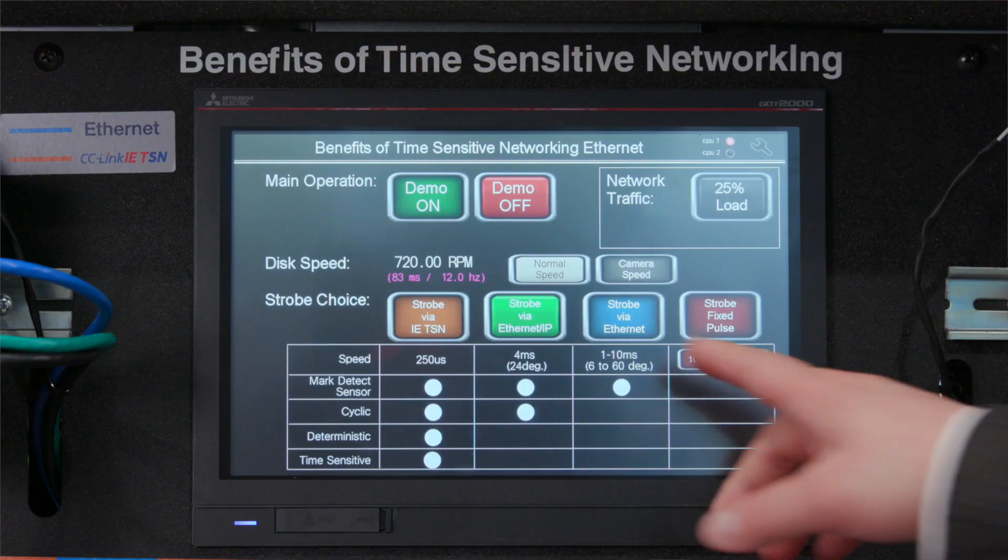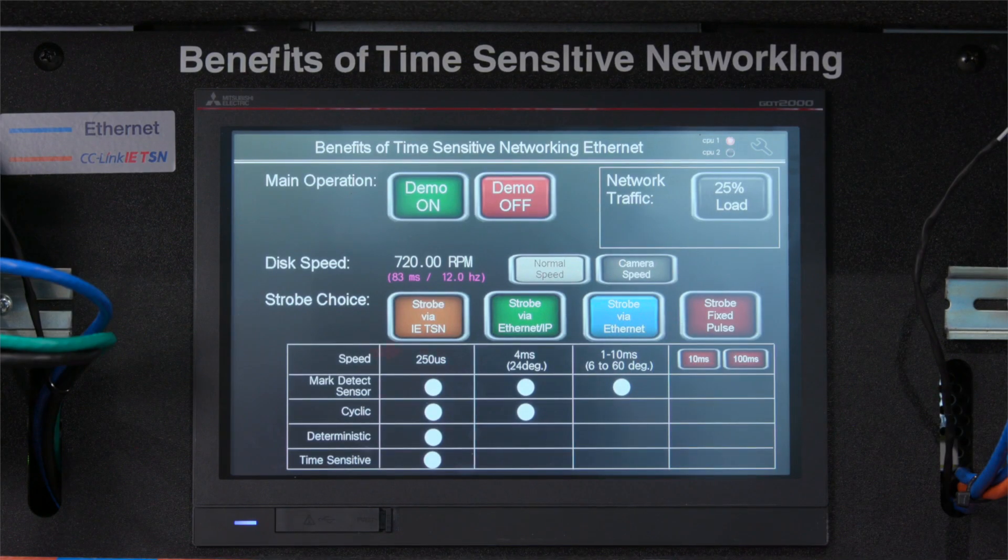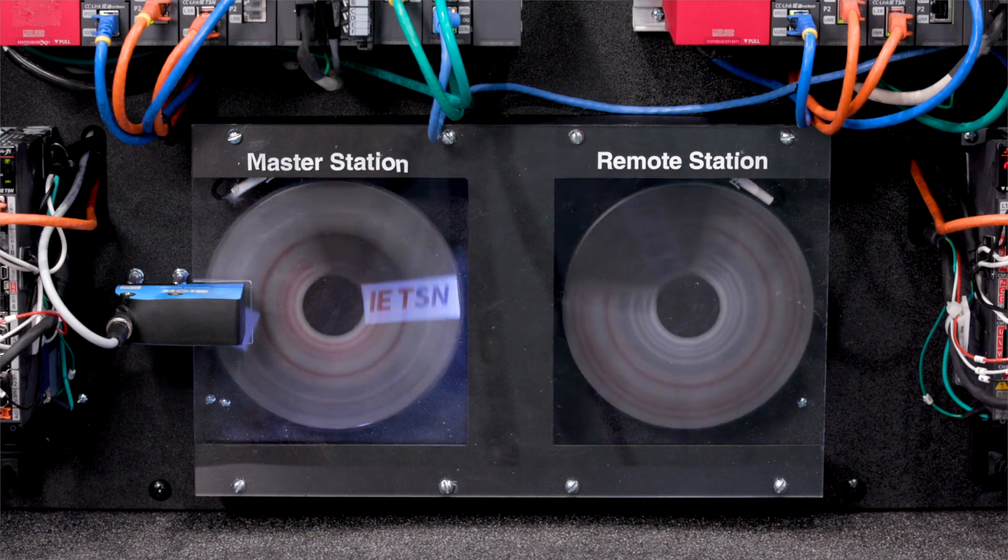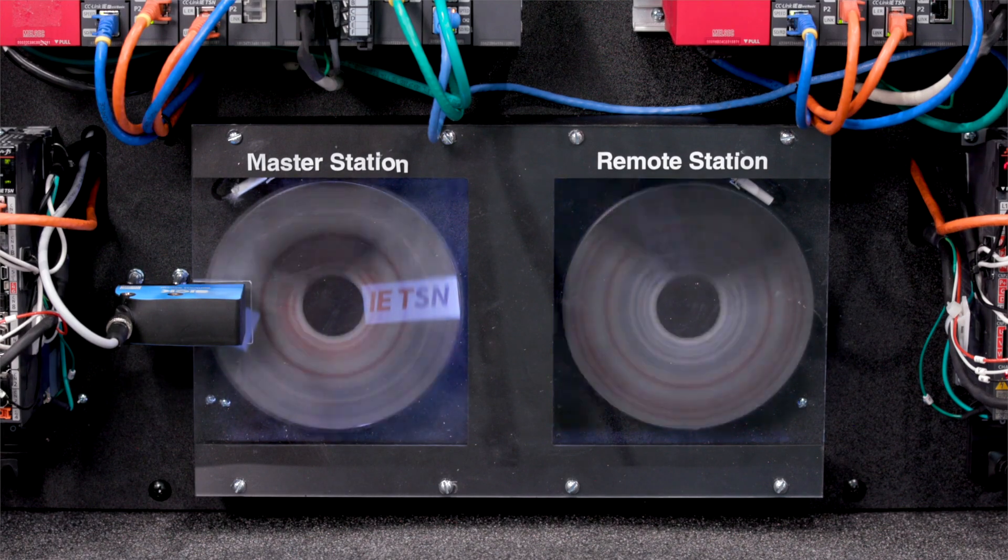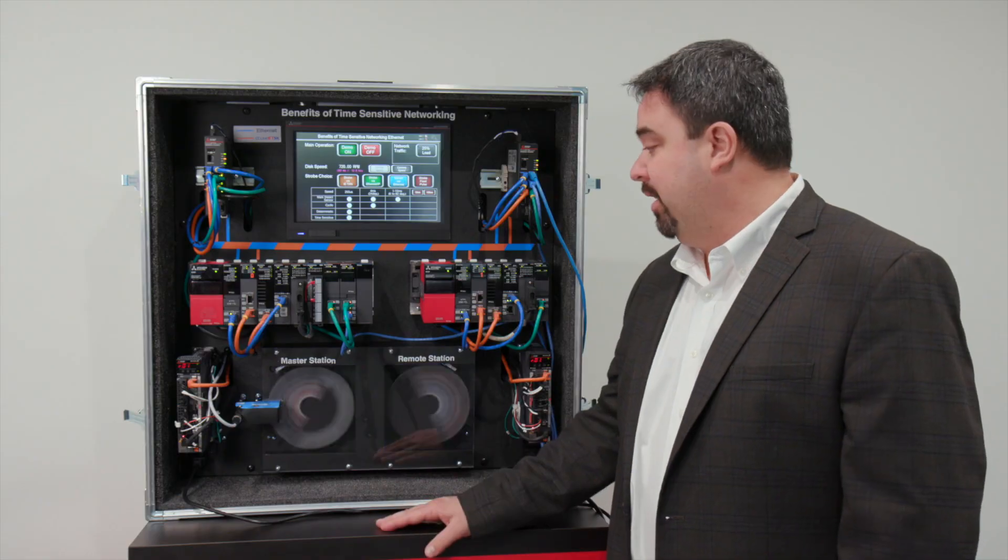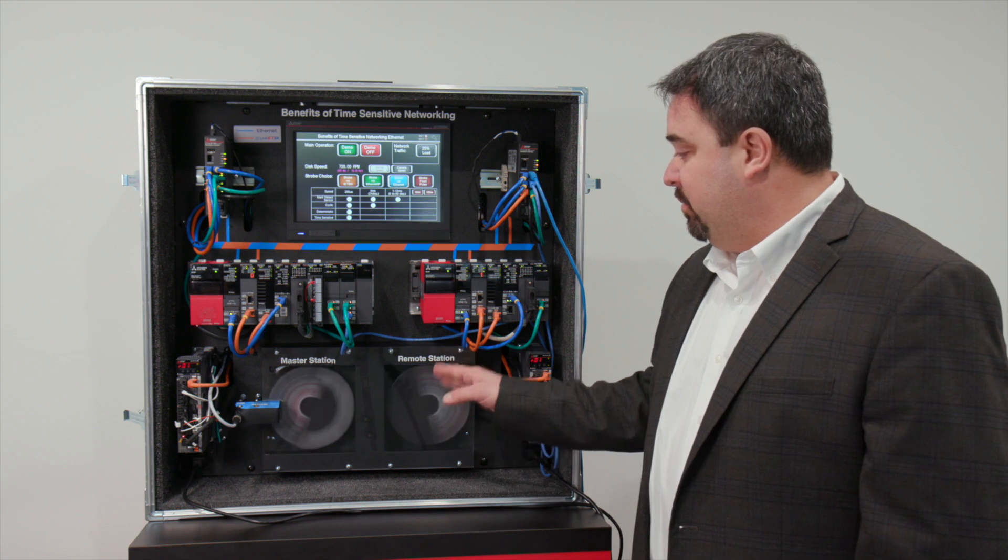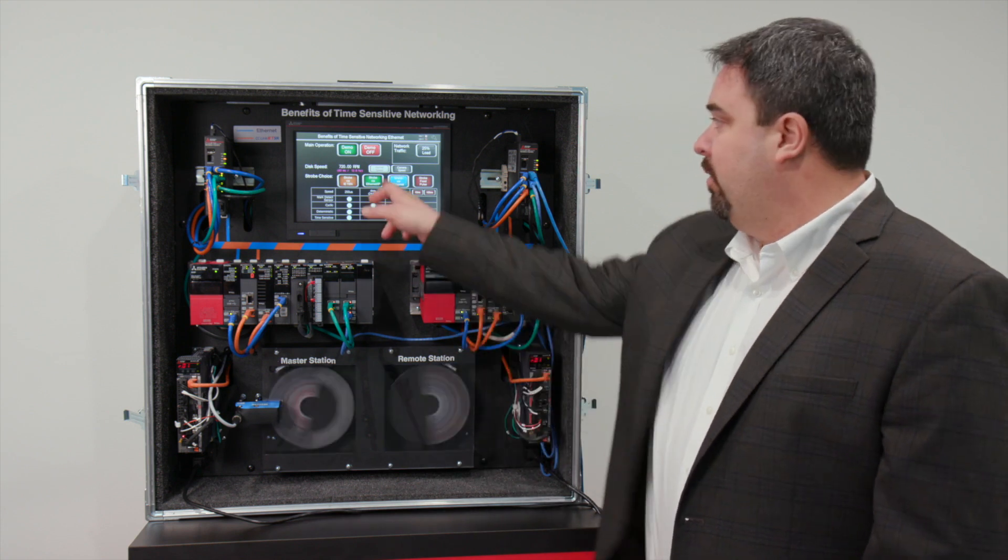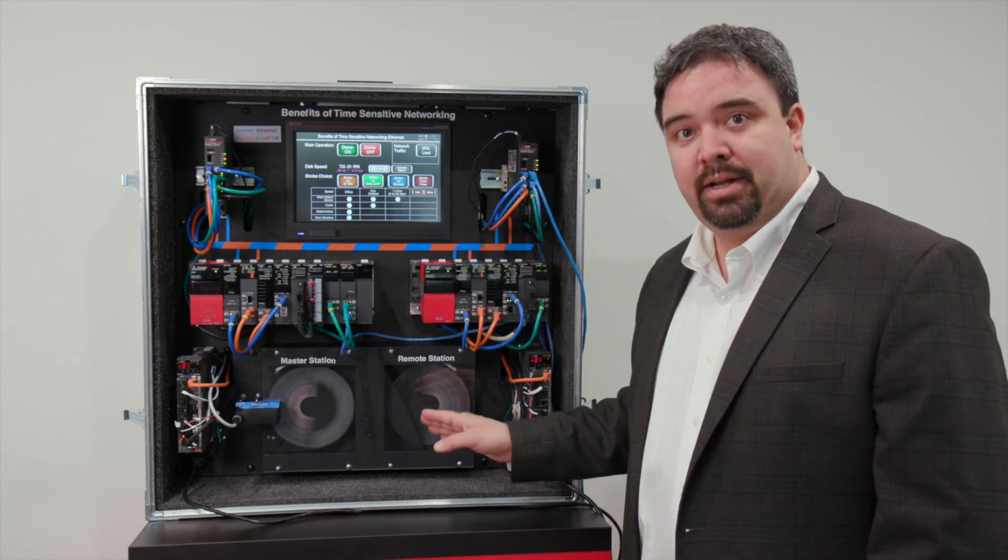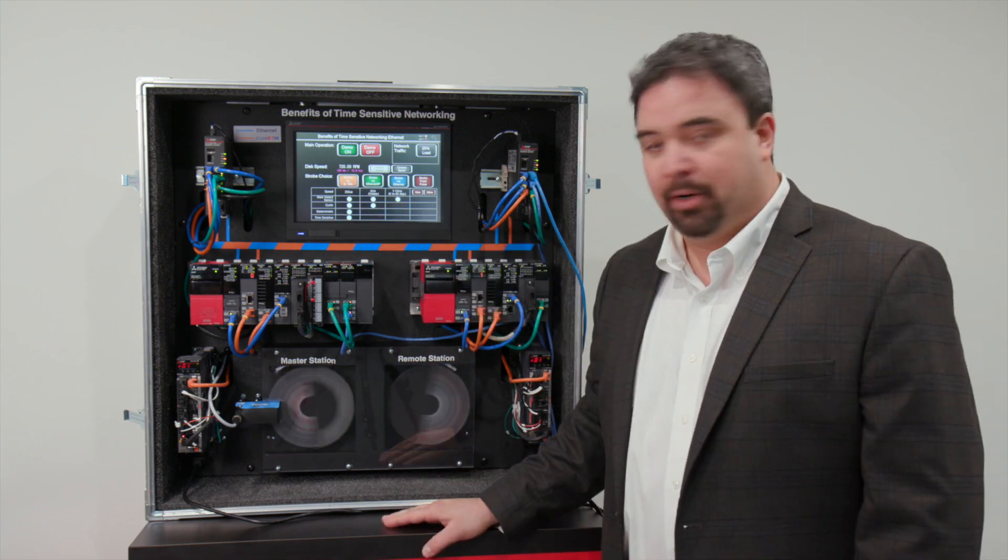We could also send the strobe signal with Ethernet and now with Ethernet it's even more delayed and that's just general Ethernet. When we send a packet out we don't know when it's going to arrive. So that's the difference between just Ethernet or a cyclic Ethernet network or a deterministic network.